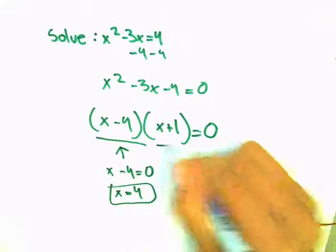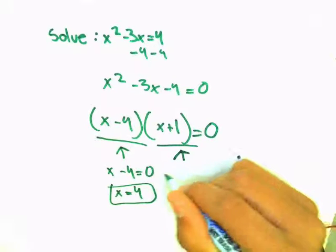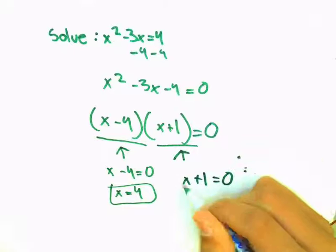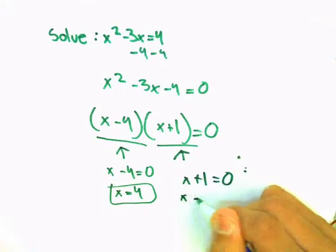And for this number, x plus 1 equals to 0. So that means x would have to be negative 1.